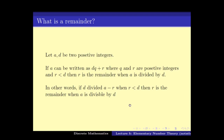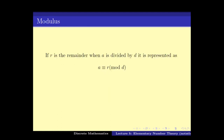Here is another way of writing the remainder. If d divides a minus r, where r is a positive integer less than d, then r is the remainder when a is divided by d. To represent this notion — that when a is divided by d the remainder is r — we use the following notation: a is congruent to r mod d. The way to read it is 'a is congruent to r mod d,' and it means a minus r is divisible by d, or r is the remainder when a is divided by d.